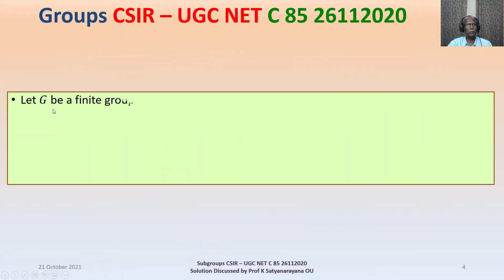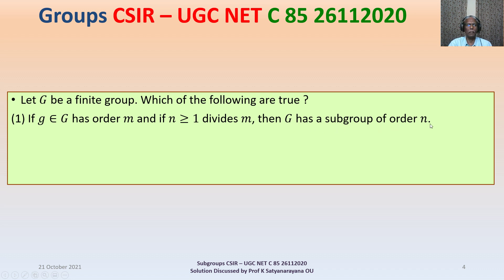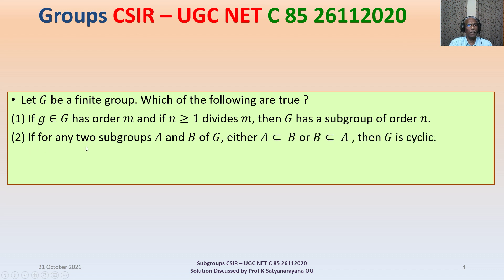The problem is: let G be a finite group. Which of the following are true? Option 1: if an element g in G has order M, and N ≥ 1 divides M, then G has a subgroup of order N. Option 2: if for any two subgroups A and B of G, either A is contained in B or B is contained in A, then G is cyclic.